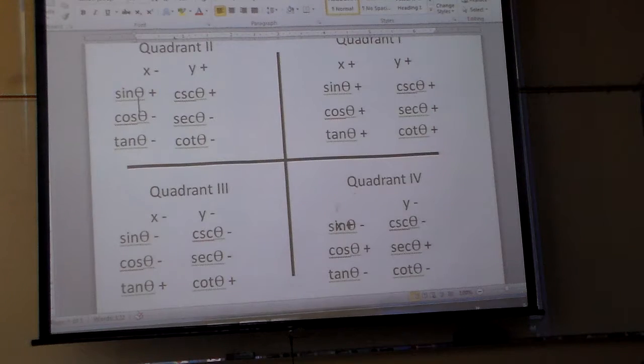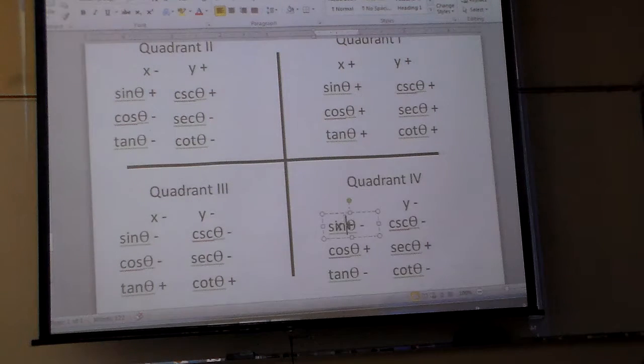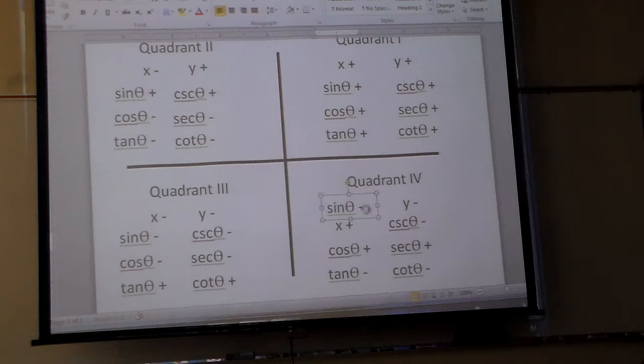So I'm going to go to my chart. Where is secant negative? Secant is negative in quadrants 2 and 3. Cotangent is negative in quadrants 2 and 4. So where do they overlap? Quadrant 2.